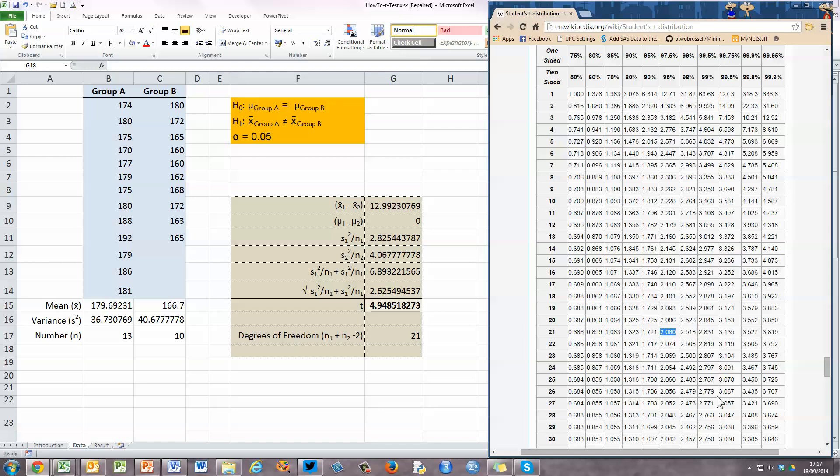And we go back then to our calculation. We can see that our t value of 4.948 is greater than the critical value. So therefore, it falls into the reject region on our t distribution. So therefore, we reject the null hypothesis that the means are the same in favour of the alternate hypothesis that the means are not the same at the 95% or alpha equal to 0.05 level.